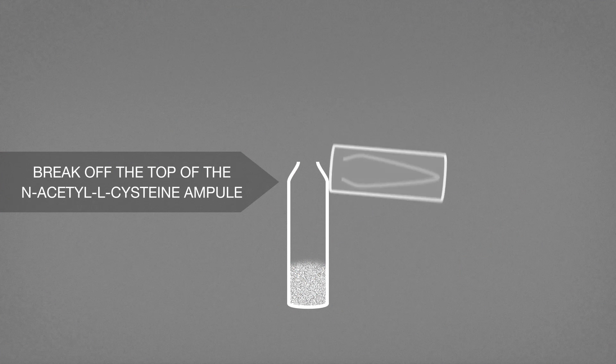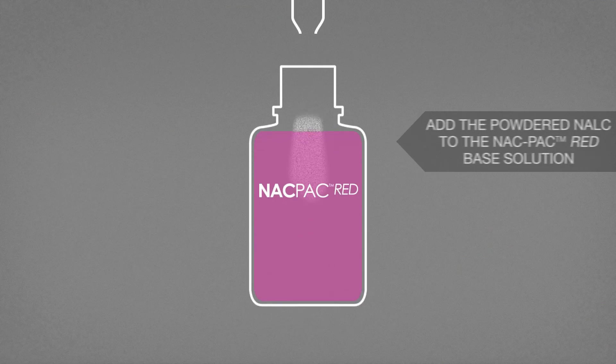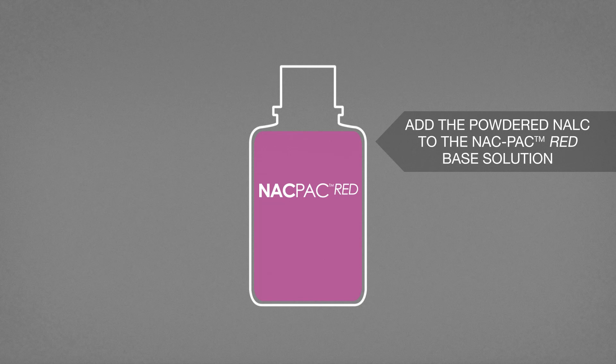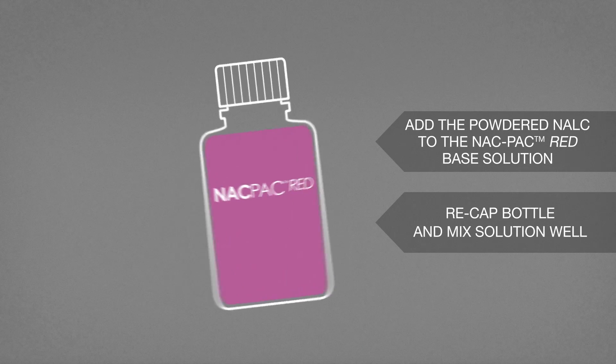Break off the top of the N-Acetyl-L-Cysteine ampule. Add the powdered NALC to the SnackPak Red base solution. Recap and mix the solution well.